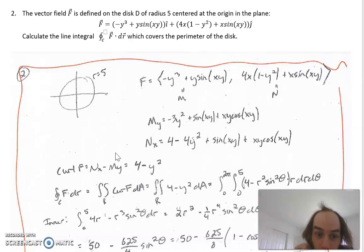All right, let's jump into this problem here. I give you a vector field, it's absolutely terrible, and I want you to calculate the line integral which covers the perimeter of the disk. I guess I should have said in this example that we're going counterclockwise. Notice it is a closed line integral.